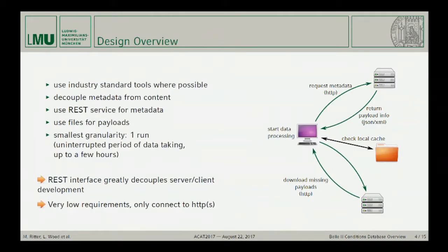For Belle II, we decided not to develop any code if it's not really necessary — to use industry-standard tools wherever possible and to decouple the metadata from the content. The decision was to use a REST service for the metadata, and plain files for the payloads. So each payload is basically just one file with a certain content, and then we have a REST service where you can discover which files you need. The smallest granularity for which metadata is conserved for Belle II we call one run — basically one uninterrupted period of data taking, which could be up to a few hours.